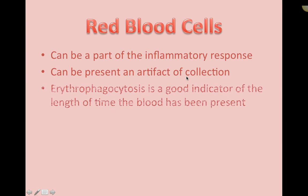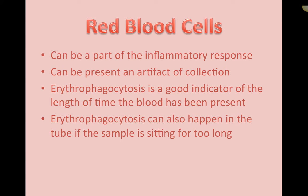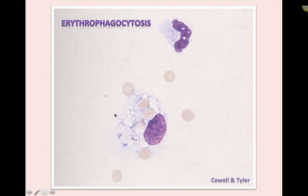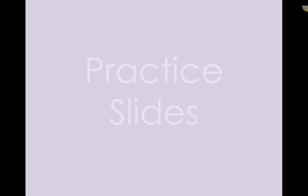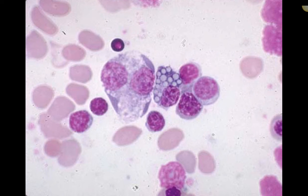Red blood cells can be part of the inflammatory response or an artifact of collection. Erythrophagocytosis is a good indicator of how long blood has been present, although it can also occur in a tube if the sample sits too long. If you get a lot of blood in your fine needle biopsy, stop and take a new sample to avoid hemodilution. This image shows erythrophagocytosis — a macrophage eating red blood cells. When a macrophage eats a white blood cell, it's called hemophagocytosis.